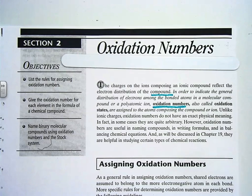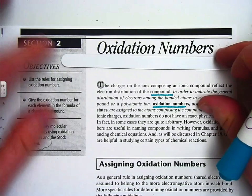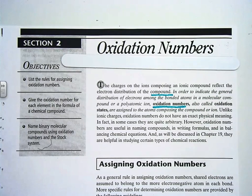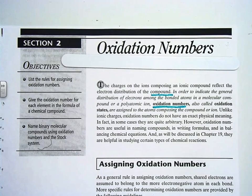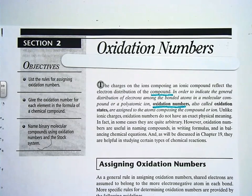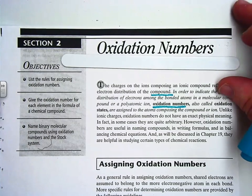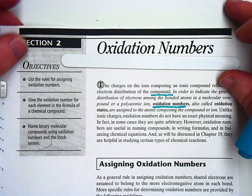Basically, we're learning a different way of naming compounds. Last chapter, we learned the stock system — the old system — the basic way for naming binary ionic compounds. But now we're going to learn the oxidation number way.